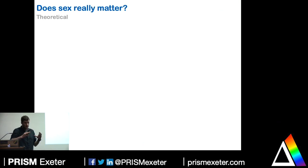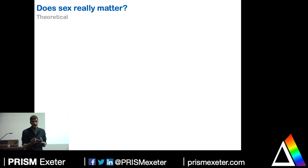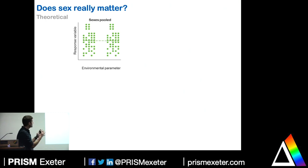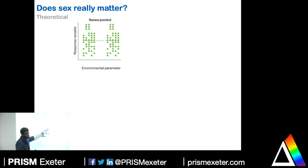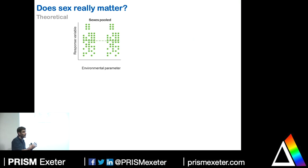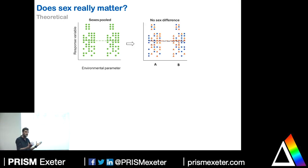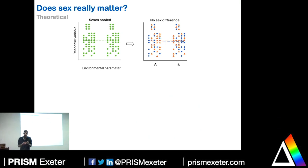Does sex really matter for biosciences research? What happens if we fail to consider sex in a biological context? In a theoretical experimental example, you've got two populations of organisms exposed to an environmental parameter — let's call it global warming. The group on the left is normal conditions, the group on the right is increased temperature, and the response variable is size. If we fail to account for sex — if sex is pooled — we're assuming males and females have exactly the same size profile and respond exactly the same way to climate change.